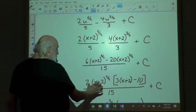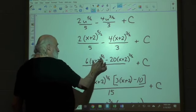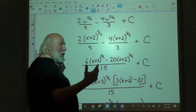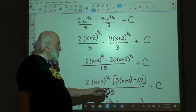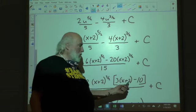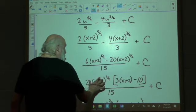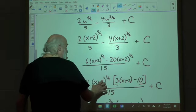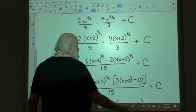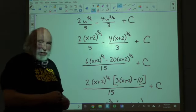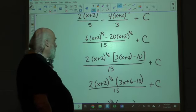So, if we have 2 goes into 6 three times, and x plus 2 to the 3 halves goes into x plus 2 to the 5 halves. Well, when you divide like bases, you subtract exponents. 5 halves minus 3 halves is 1. So, this is technically 3 times x plus 2 to the 1st power. Do the same thing over here. We take 2 goes into negative 20, negative 10 times. And x plus 2 to the 3 halves goes into x plus 2 to the 3 halves one time. So, this is just minus 10 or negative 10. Depends on how you want to look at it. The denominator is still 15.